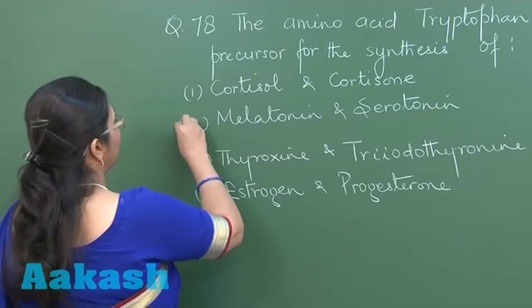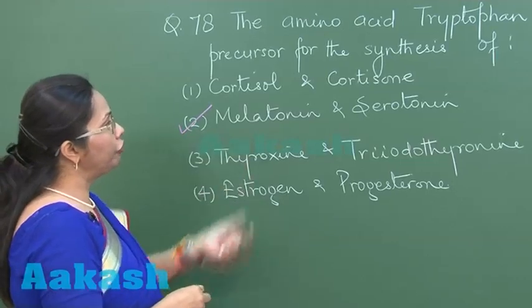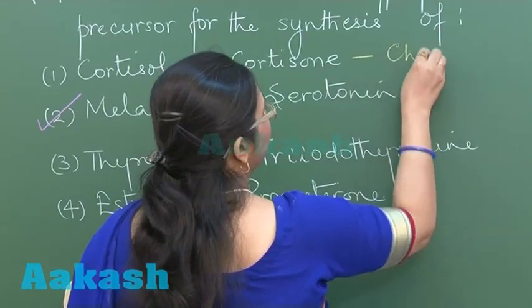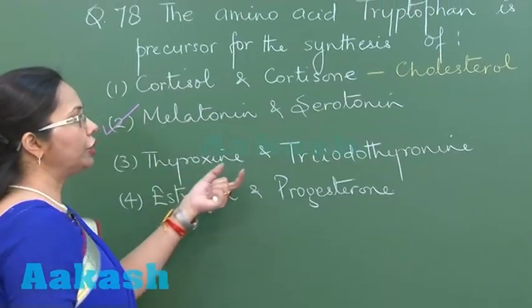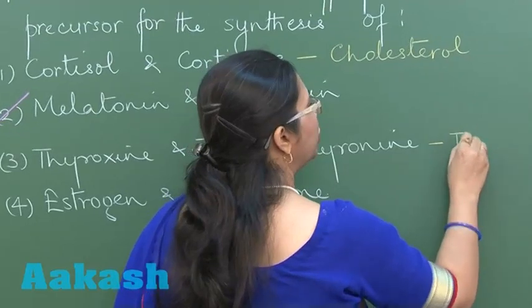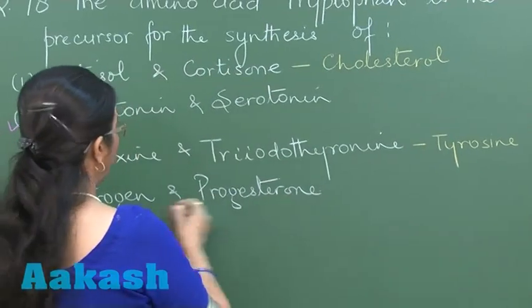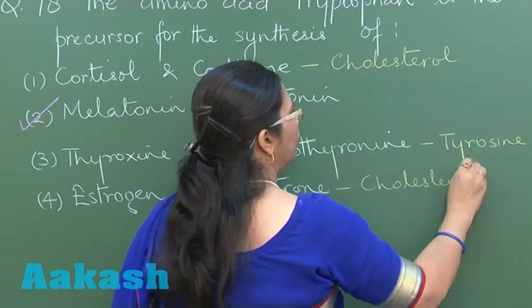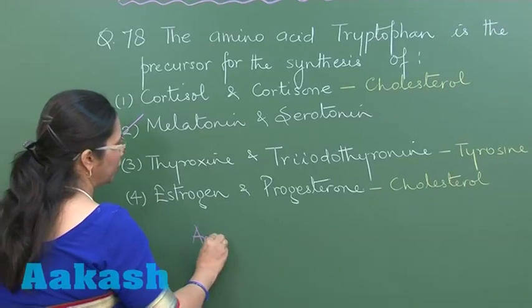The correct choice is melatonin and serotonin. Reviewing the other options: cortisol and cortisone are steroids, so their precursor is cholesterol. Thyroxine and triiodothyronine — T3 and T4 — are iodinated tyrosines, so they are synthesized from tyrosine. Estrogen and progesterone are again steroids, synthesized from cholesterol. So our correct answer is 2.